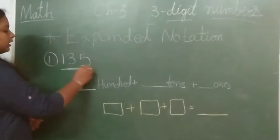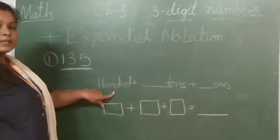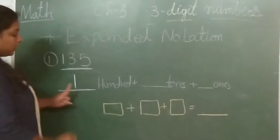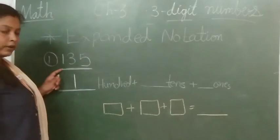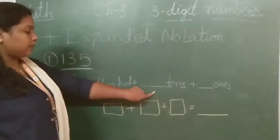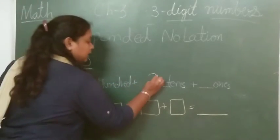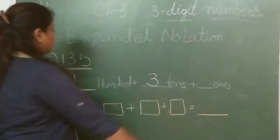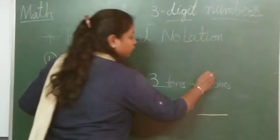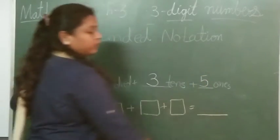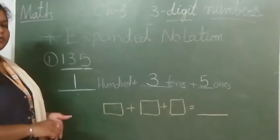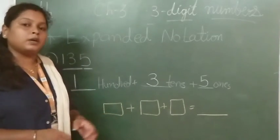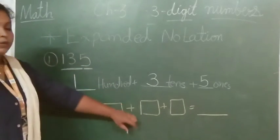So for 125 — in the place of hundreds, 1 is there. So you have to fill 1 because 1 is in the hundreds place. Now we move to the tens place. In the tens place, 3 is there, so you will write number 3. And in the ones place, 5 is there, so you will write number 5. You just have to put the numbers according to their proper place.